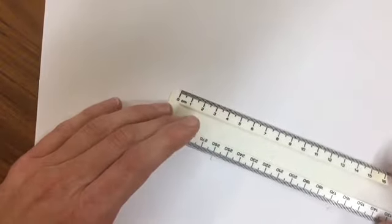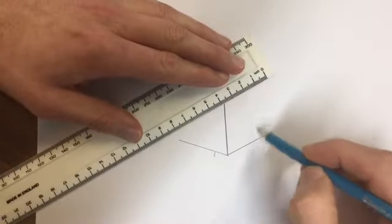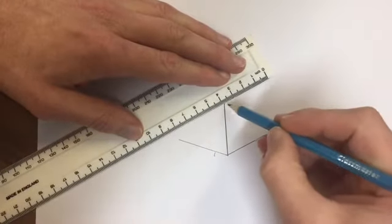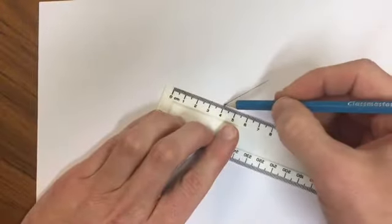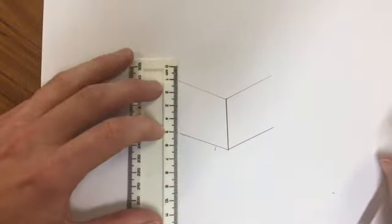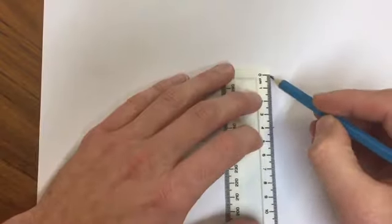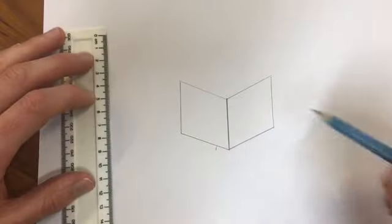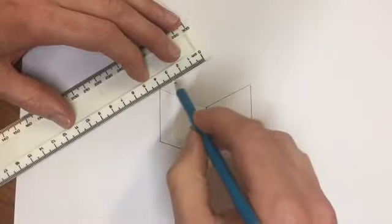Then at the top, I want another set of lines, and these would be parallel to that, and that would again be about four centimeters. So you end up with something that looks like that, and then connect up the sides. It should look something like that, like a book.